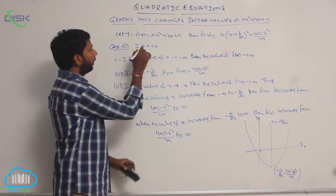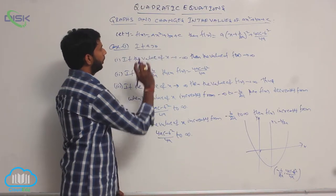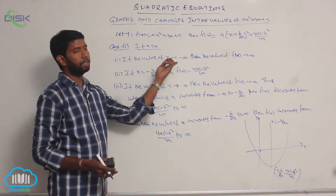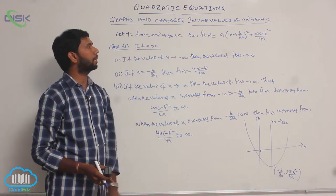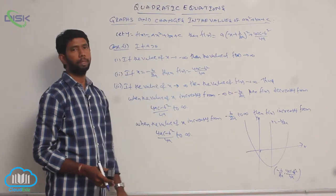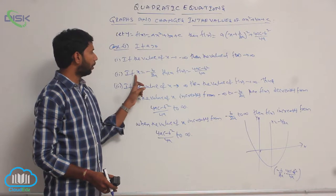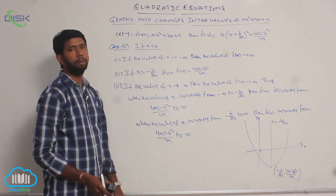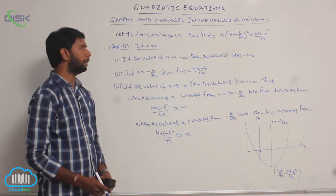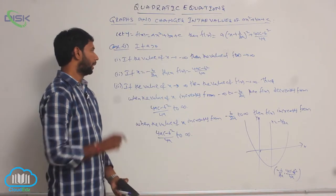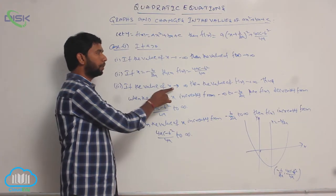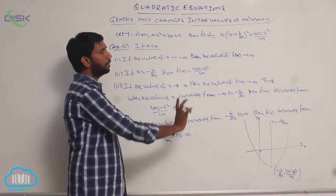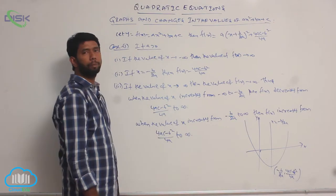In the first case, if a is greater than 0: if the value of x approaches minus infinity, then the value of f of x approaches plus infinity. If x equals minus b over 2a, then f of x equals 4ac minus b squared over 4a. If the value of x approaches plus infinity, then the value of f of x also approaches plus infinity.